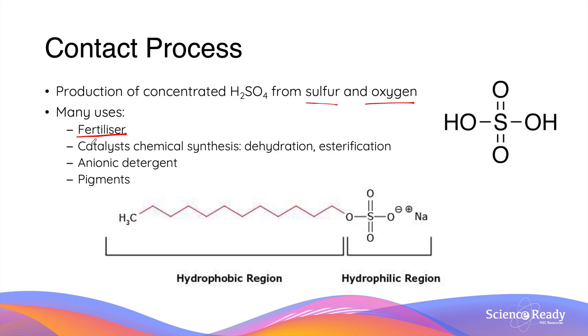In addition, sulfuric acids are also used as catalysts in various chemical synthesis, two of which we've looked at in the organic chemistry module, which are dehydration and esterification. Sulfuric acids are also used in the production of anionic detergents, specifically the detergents that have a sulfate head as shown in this diagram here. And finally, various types of pigments also contain sulfuric acid.